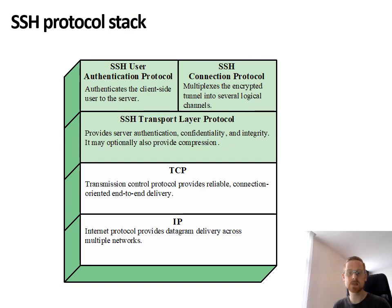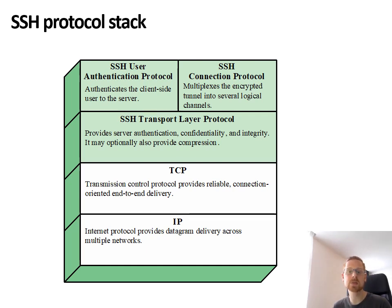Just like TLS, SSH runs on top of the TCP/IP protocol stack. However, in contrast to TLS, SSH is focused on remote logon and command execution. The SSH transport layer protocol provides server authentication, confidentiality, integrity, and optional compression. The SSH user authentication protocol authenticates the client to the server, and the SSH connection protocol multiplexes the encrypted tunnel into several logical channels.